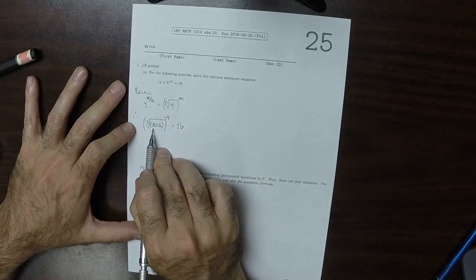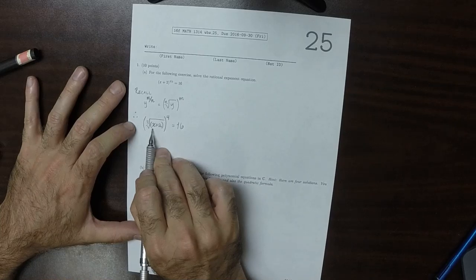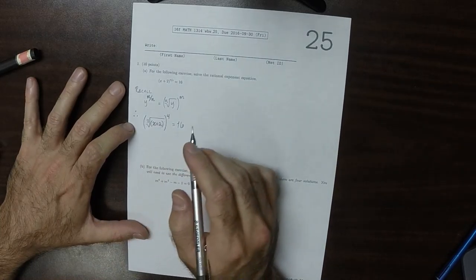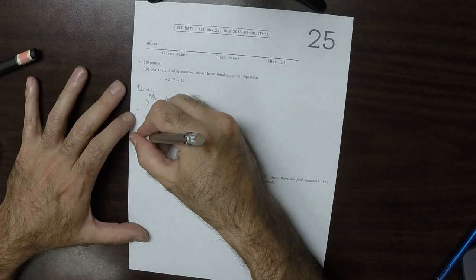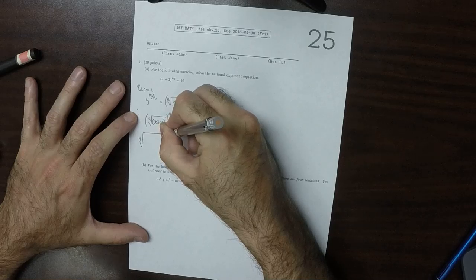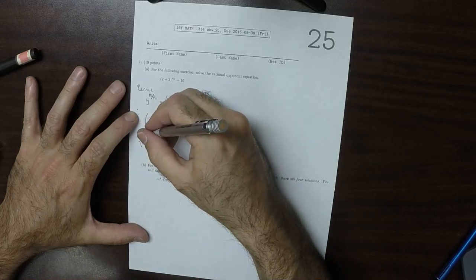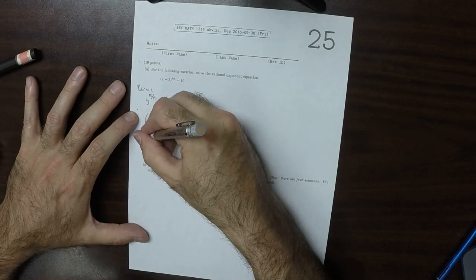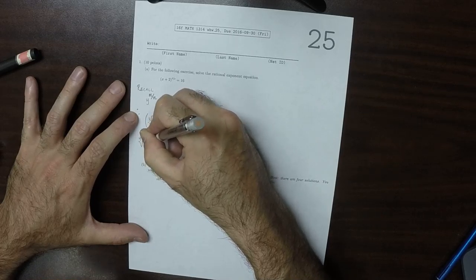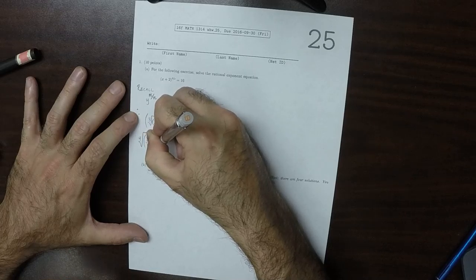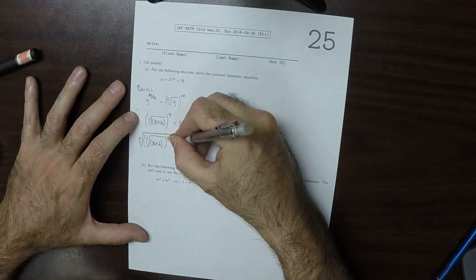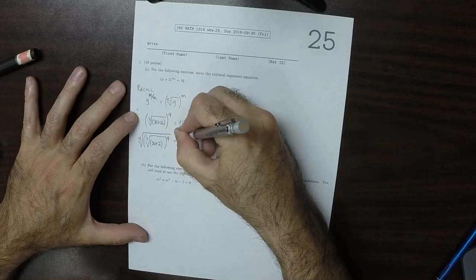We want to get this x by itself. So now, we want to compute radical 4 of both sides. Fourth root of cube root of x plus 2, and then this to 4 is fourth root of 16.